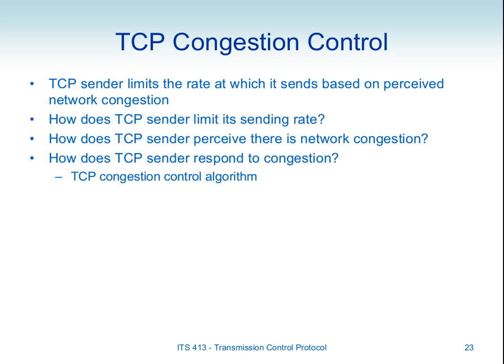Recall that there are three main features of TCP. There's the reliability feature, which is retransmissions — we send data, if something goes wrong we resend. Retransmissions occur if we have a packet loss. With the retransmission scheme in TCP for reliability, we have two events that indicate a packet loss: a timeout and the special feature of three duplicate ACKs.